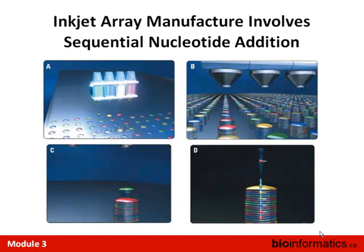The basic idea for Agilent arrays is that instead of four colors in your printer, you have four bases. They have specific chemistry that allows the inkjet shooter to say this spot needs an A, and sequentially build up a molecule base by base. This isn't necessarily the fastest approach for printing really dense arrays, so there are some speed concerns.